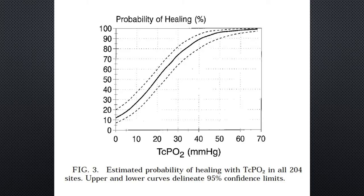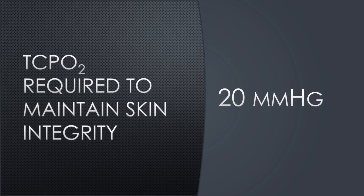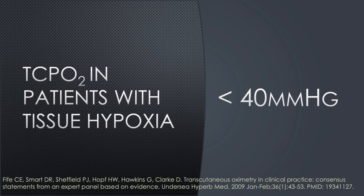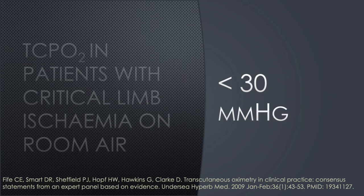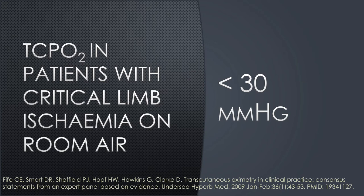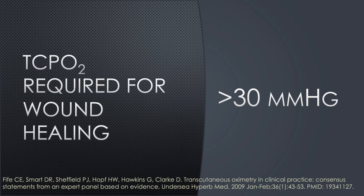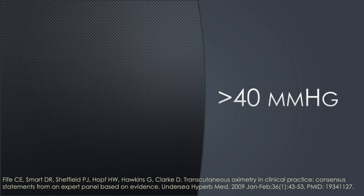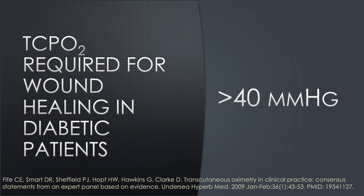This graph depicts the estimated probability of healing with TcPO2 levels. A TcPO2 of 20 mmHg should be sufficient to maintain skin integrity. Tissue hypoxia is defined as a TcPO2 of less than 40 mmHg. Patients with critical limb ischemia will have TcPO2 levels of less than 30 mmHg. A TcPO2 of more than 30 mmHg is required for a wound to heal in a non-diabetic patient, while a TcPO2 of more than 40 mmHg is required for a wound to heal in a diabetic patient.